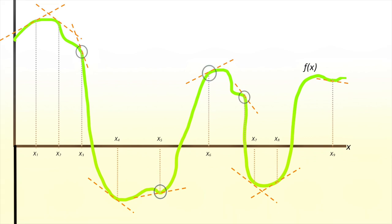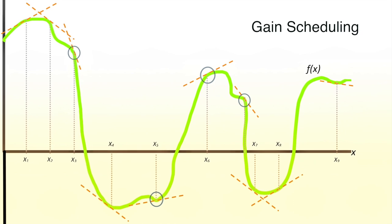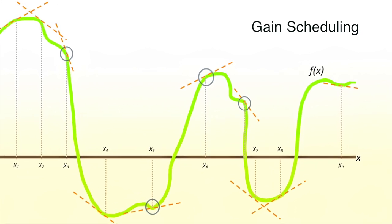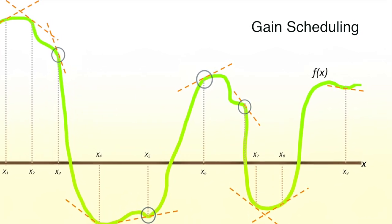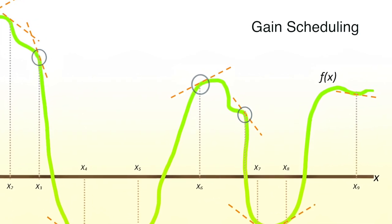Thus, as the satellite progresses in its mission, gain scheduling allows the controller to rewrite the control law to suit a specific part of the space mission. Here, you can see circles at the operating points where the dynamics have been linearized. Each controller gain at X1, X2, X3, and so on will activate for its specific role in the control problem.